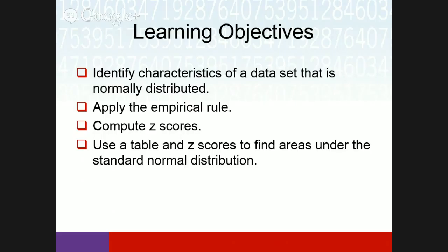We'll talk about a normal distribution and a standard normal distribution. With normal distribution data, they're going to follow certain rules, and we're going to look at the empirical rule — what percent of the population falls within one standard deviation of the mean and median. One requirement for normal distribution is the mean and the median have to be the same number. The empirical rule breaks up into the first, second, and third standard deviations.